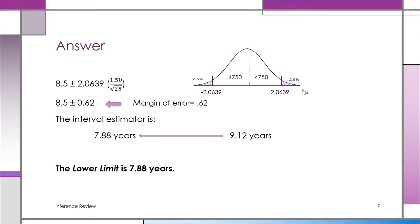Note that 2.0639 is not far from 1.96 (the Z value), but we can't use Z — it's a small sample with only 24 degrees of freedom. T with infinity degrees of freedom equals Z, but we'd need at least 50–60 degrees of freedom to use Z. The interval is: 8.5 + 0.62 = 9.12 years (upper) and 8.5 − 0.62 = 7.88 years (lower). The lower limit of the confidence interval is 7.88 years.